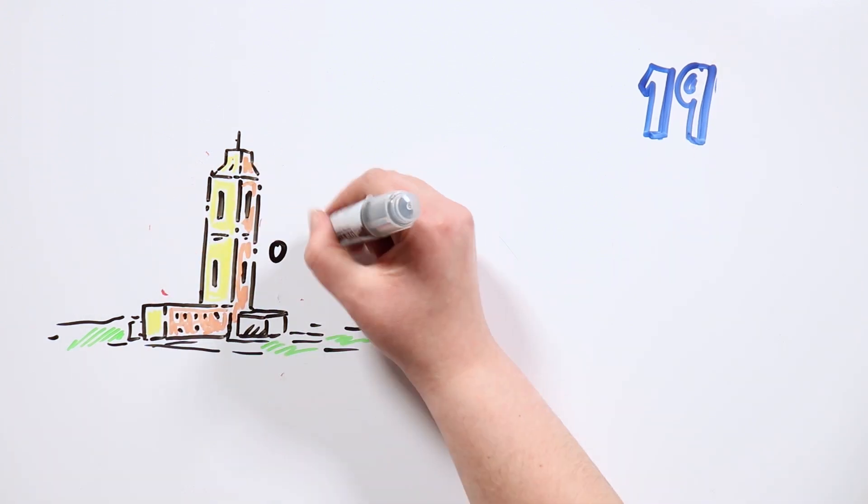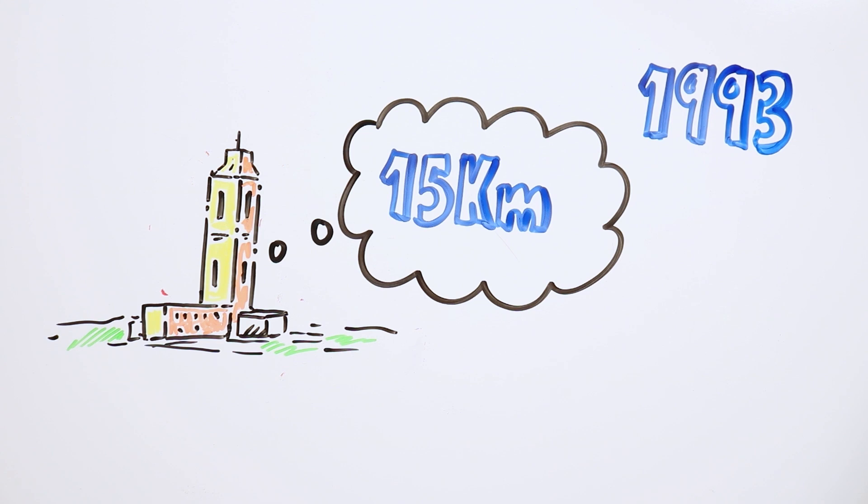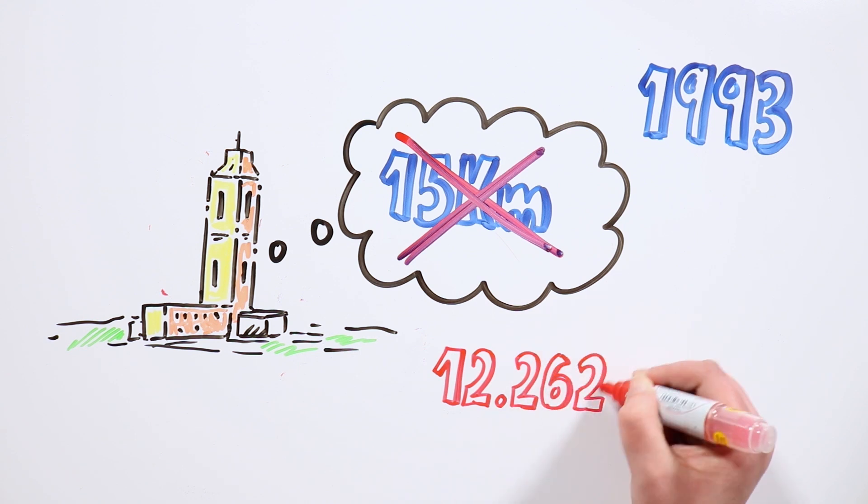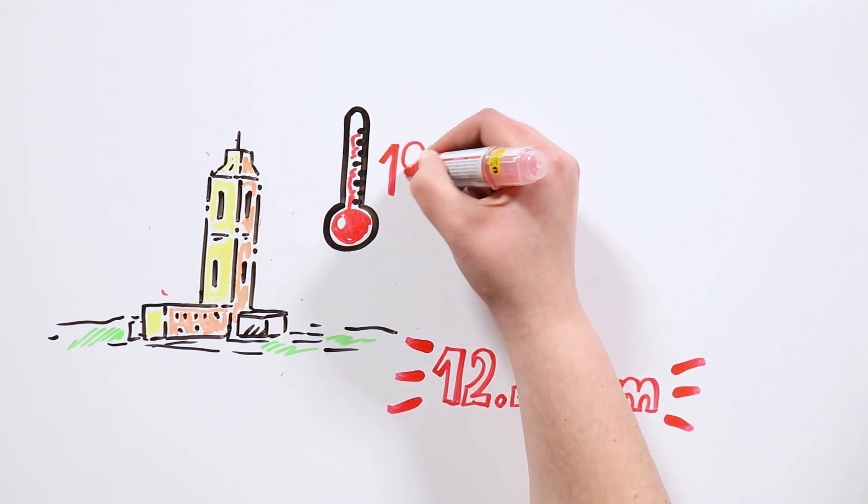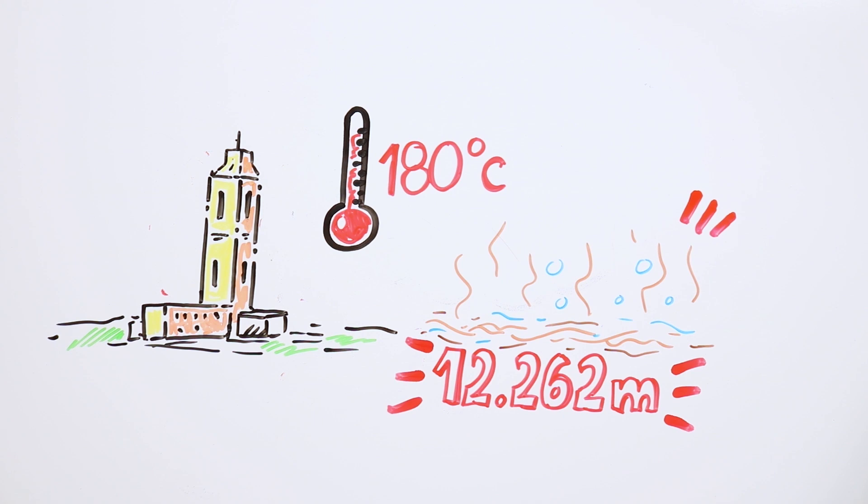It took 5 years to reach the previous depth. They hoped to reach the final goal of 15 kilometers by 1993. However, a year earlier, after many unsuccessful attempts, the work was halted at 12,262 meters, where the temperature of 180 degrees Celsius caused the continuous flow of mud and boiling hydrogen.